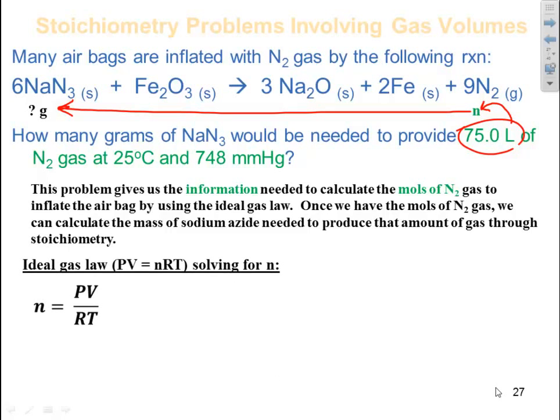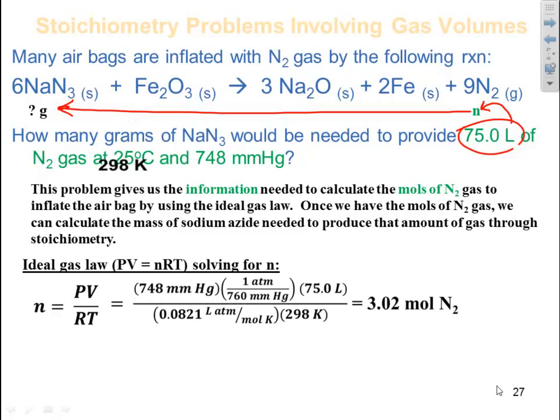First step, ideal gas law, PV equals nRT, solve for n, n is equal to PV over RT. Plug in your values, 748 millimeters of mercury, I'm going to need atmospheres to cancel with my R units, so I'm going to go ahead and convert that within my equation here, 760 millimeters to one atmosphere. Or I could have done that outside and then brought that in as atmospheres, your choice.